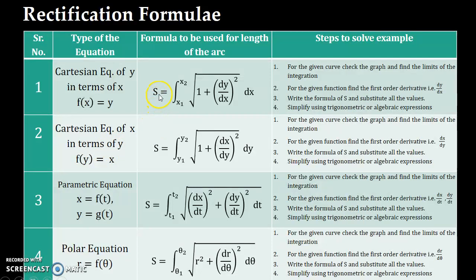Now you can see that the s denotes the arc length. So if the curve is given and you are supposed to find a part of a curve within x1 to x2, then it can be found by using the formula s equal to integration x1 to x2 under root 1 plus bracket dy by dx whole square dx.